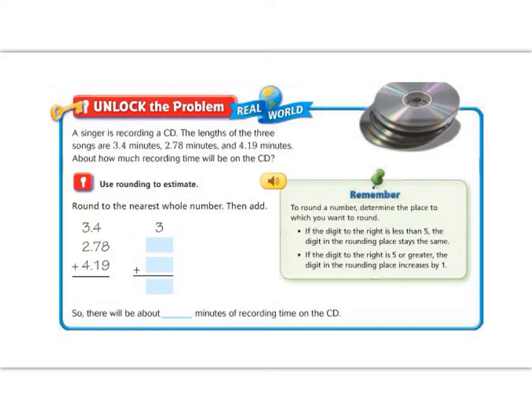It's always good to underline the question we are trying to solve. The question is at the end, about how much recording time will be on the CD. And I'm going to circle the word about, because when we see the word about, it usually means that we're going to estimate. I'm also going to circle my numbers. We have 3.4, 2.78, and 4.19.